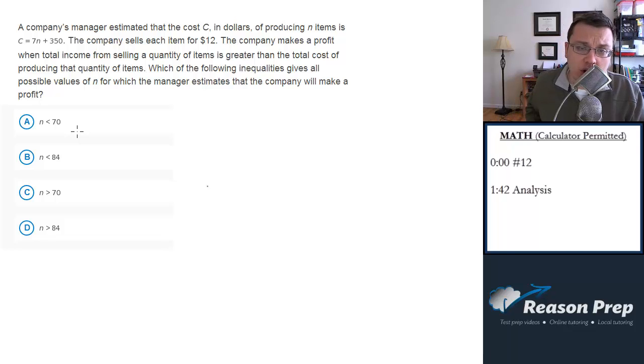A company's manager estimated that the cost c in dollars of producing n items is c equals 7n plus 350. The company sells each item for $12. The company makes a profit when total income from selling a quantity of items is greater than the total cost of producing that quantity of items. Which of the following inequalities gives all possible values of n for which the manager estimates that the company will make a profit?